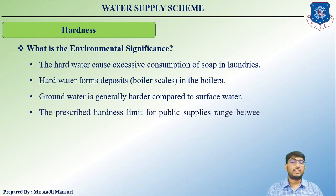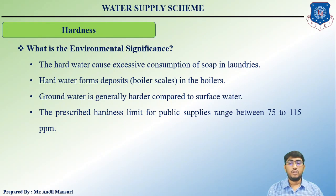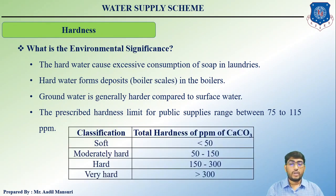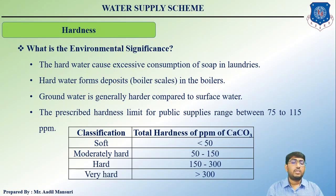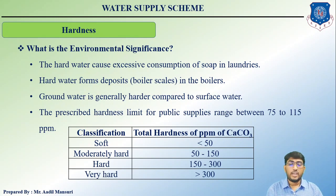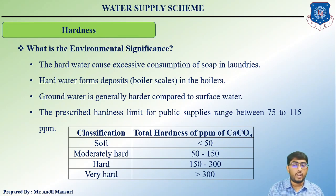Classification of water by hardness in mg/L of CaCO₃: less than 50 — soft; 50 to 150 — moderately hard; 150 to 300 — hard; greater than 300 — very hard.